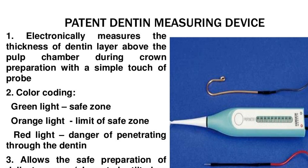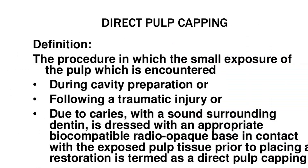Patent Dentin Measuring Device: 1. Electronically measures the thickness of dentin layer above the pulp chamber during crown preparation with a simple touch of a probe. 2. Color coding: Green light – Safe Zone, Orange light – Limit of Safe Zone, Red light – Danger of penetrating through the dentin. 3. Allows the safe preparation of delicate cases including elongated, tilted, or deciduous teeth.